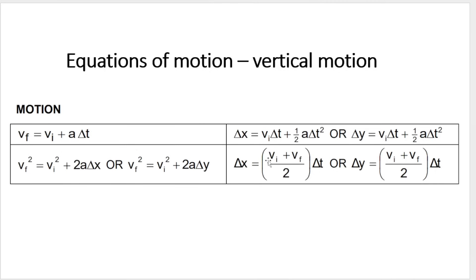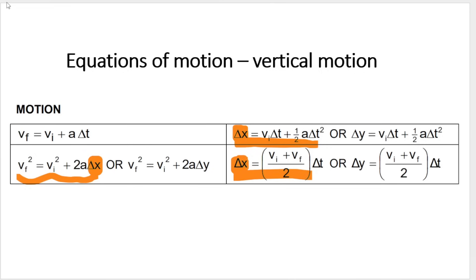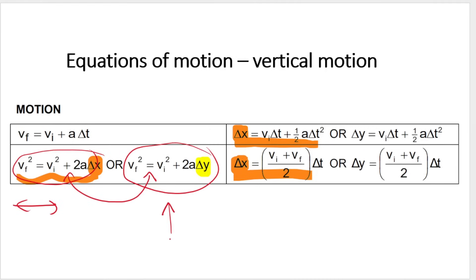This is a screenshot from the final exam formula sheet. You can see that we still have the horizontal equations — identifiable because of delta X. You get an alternative version of each formula: the same formula, but instead of delta X, we've got delta Y. These two formulas are the same — one you use for horizontal motion, and the same formula with delta Y you use for vertical motion. Each formula has two alternatives: one for horizontal motion and one for vertical motion.